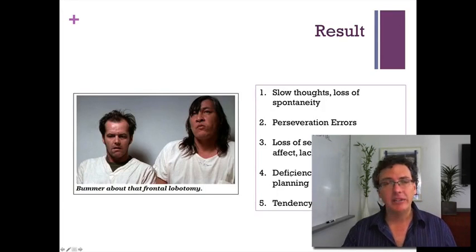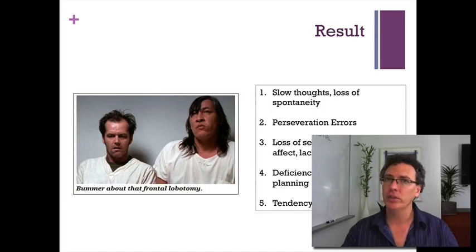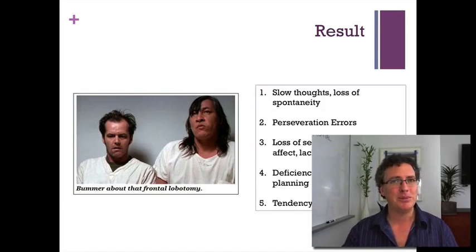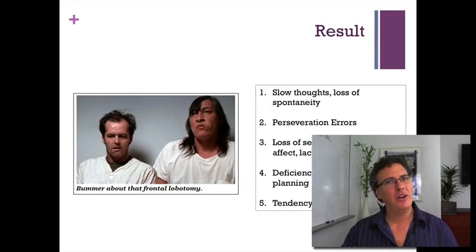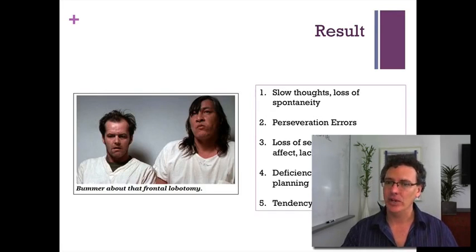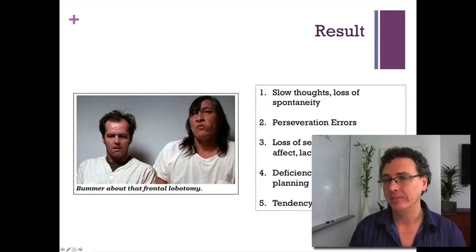People with lobotomies can't plan very well — they don't seem able to think about the future and seem to live in the now. While living in the now is something yoga practitioners celebrate, and it's probably great to visit that way of being every now and then, if you want to be effective in the world you have to be able to plan and strategize. These patients can't — so the frontal lobes handle that.